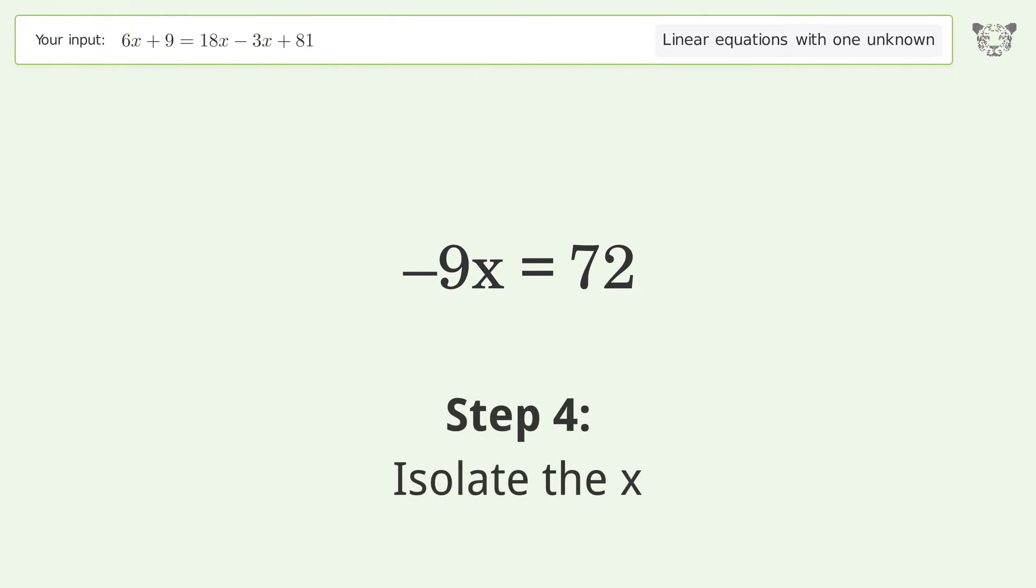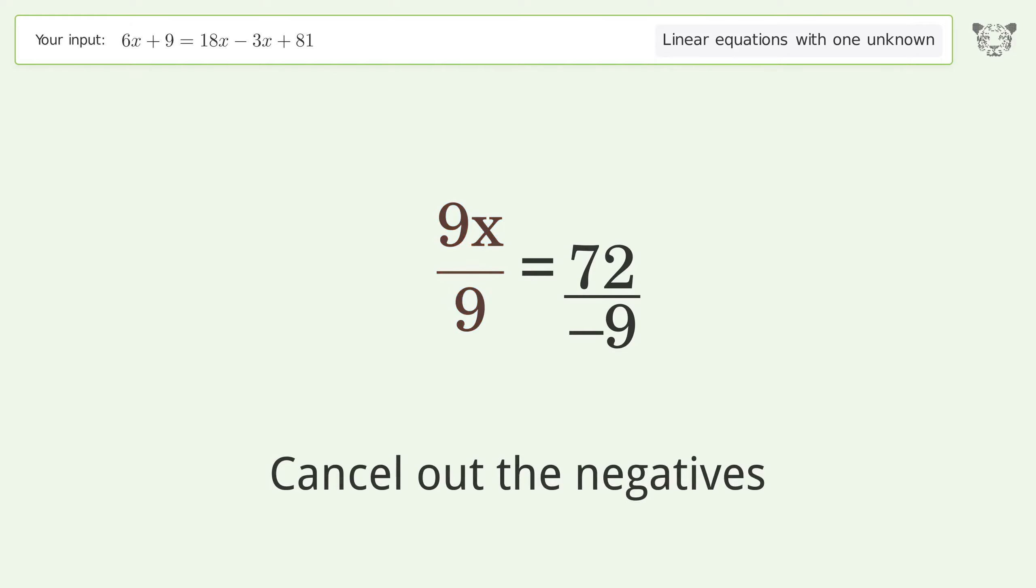Isolate the x. Divide both sides by negative 9. Cancel out the negatives. Simplify the fraction.